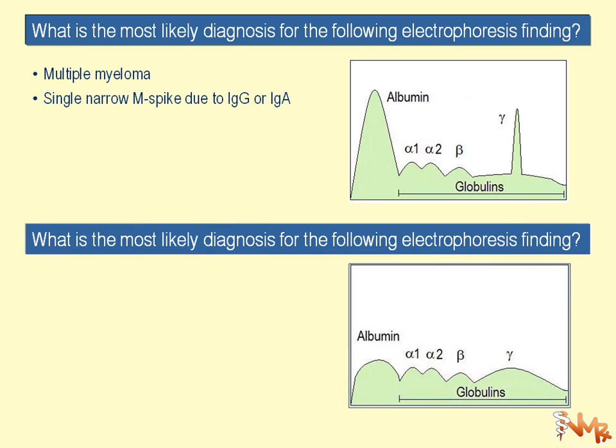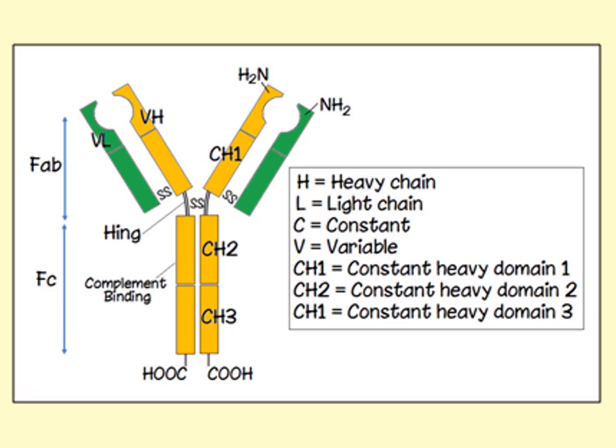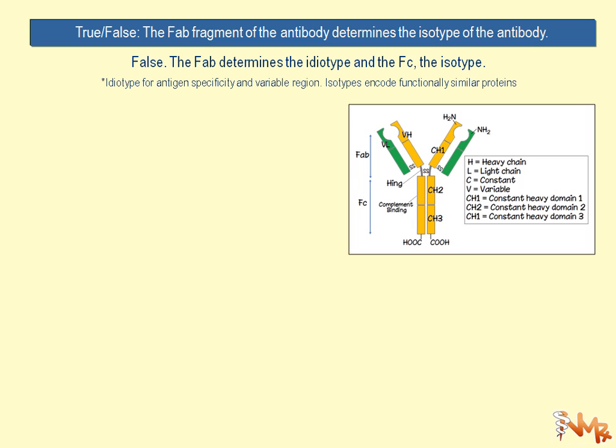Another finding to consider: if the albumin position is flattened out compared to normal, this is a good case for hypoalbuminemia, which may result from nephrotic syndrome. True or false — the Fab segment of the antibody determines the isotype? That is false. Fab determines the idiotype, and the Fc is the one that determines the isotype. Remember: idiotype is for antigen specificity and variable regions.